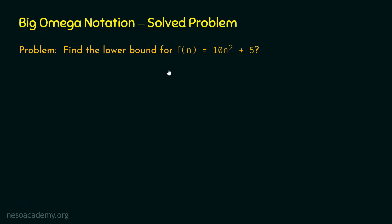In case of finding the upper bound, we apply the definition of Big O notation. In case of lower bound, the first two steps are the same but the last step is different — we need to apply the Big Omega definition. So to find the lower bound for Fn, we find the dominant term, assume Gn based on it, and finally apply the definition of Big Omega notation.